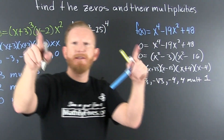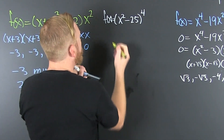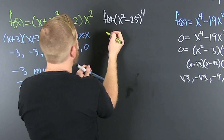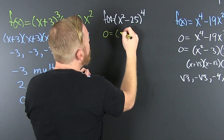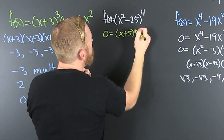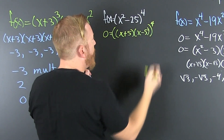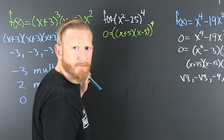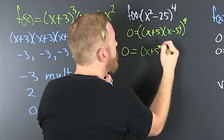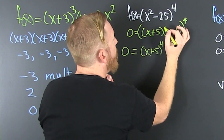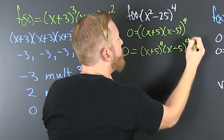Let's go back to this next example. It has factors in the middle — if we're finding the zeros, we set it equal to zero. That's the difference of squares again: (x + 5)(x - 5), but all of that is to the fourth power. So this is (x + 5)⁴(x - 5)⁴.